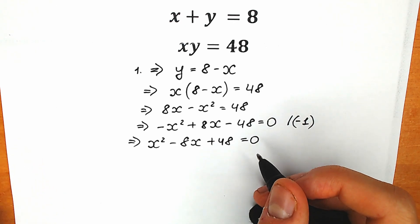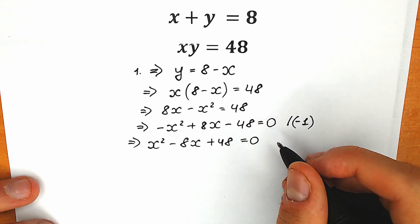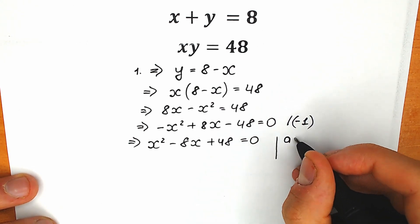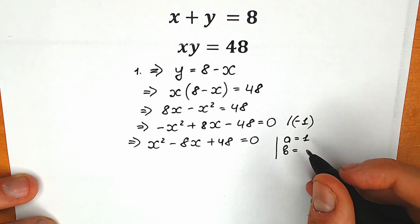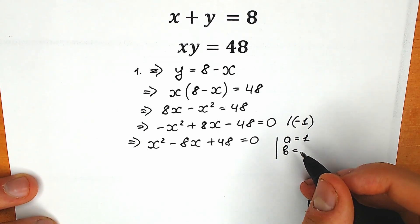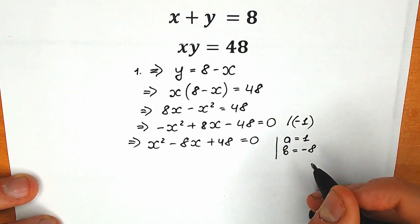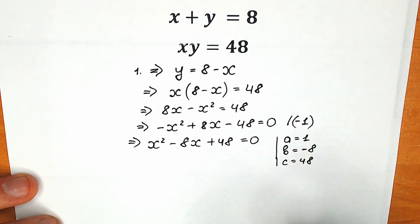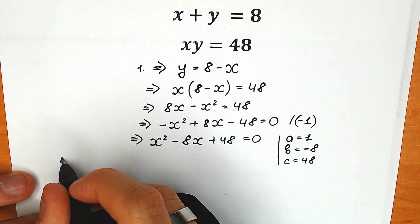There are a lot of ways to solve this, but I'm going to use the classic method with coefficients. So a equals 1, b equals minus 8, and c equals 48. Now let's find our discriminant.